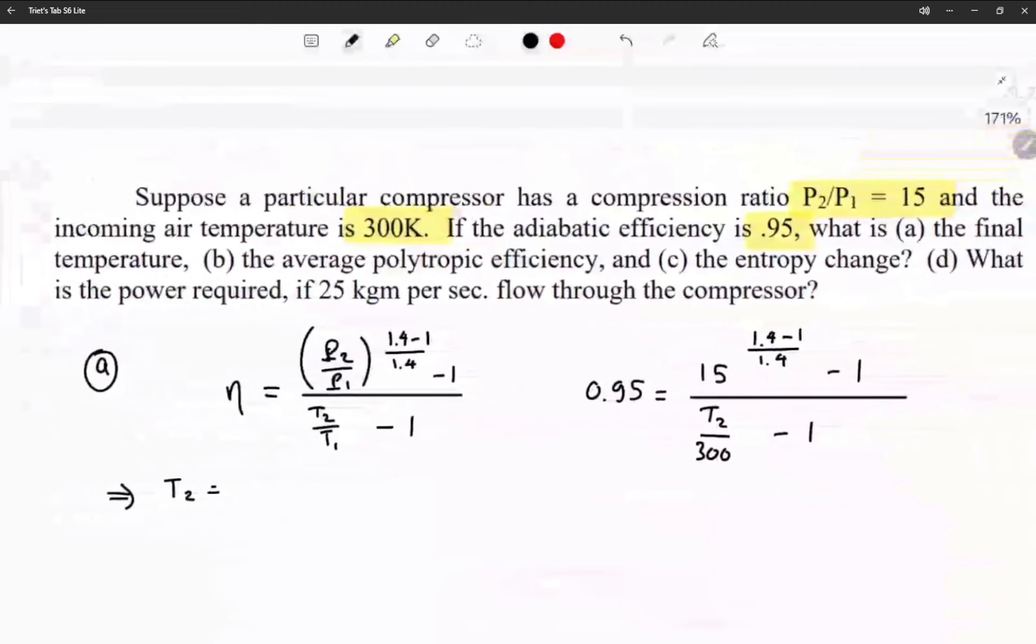Let me plug that into my calculator: 0.95, and then inside you have 15, and in the bottom you have 300K minus 1. And then I'm going to go ahead and solve for the final temperature.